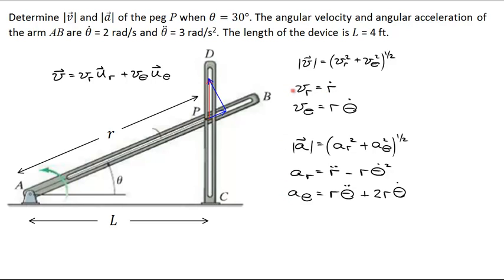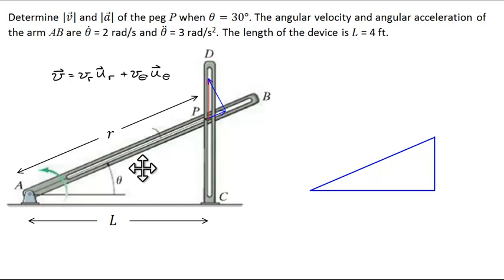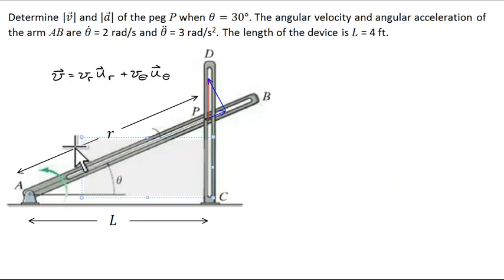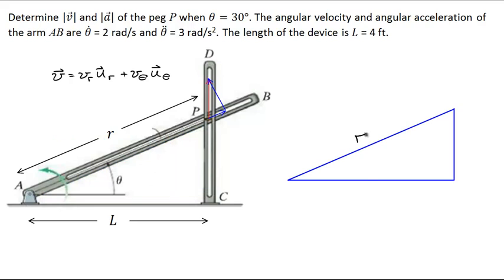If we know r-dot we can calculate vr, and if we know r we can calculate v-theta. The first thing we want to do is draw a relationship between r and theta. I've drawn a triangle to show the trigonometry and moved it to show the relationship between r, l, and theta. The cosine of theta equals l over r, which means r equals l over cosine theta.